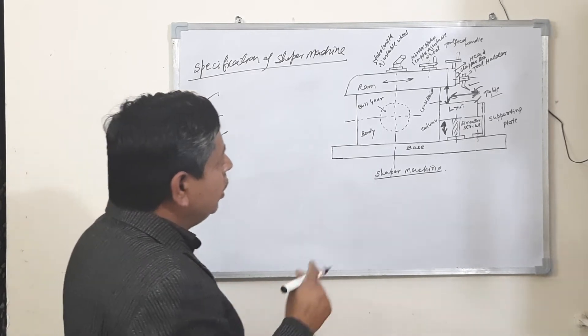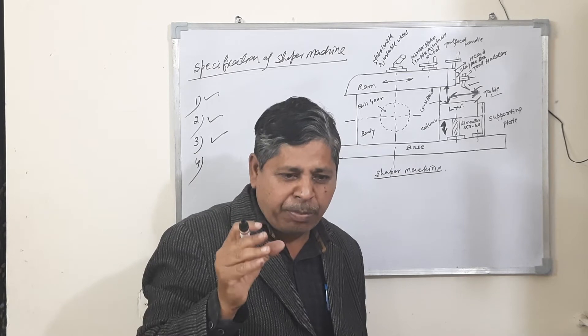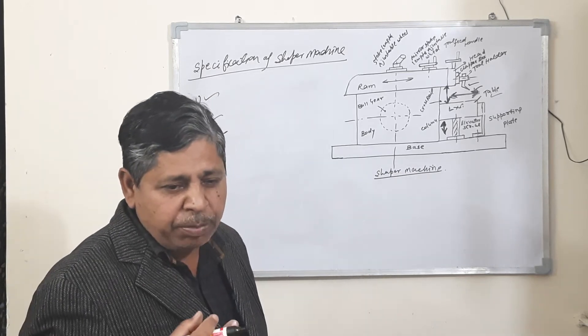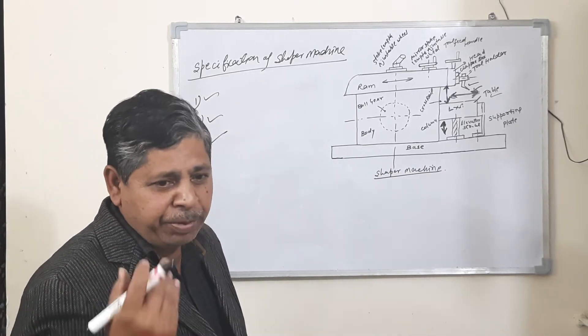Number four: what type of transmission power is used? By gear system, by belt, or by V-belt.